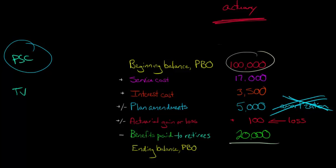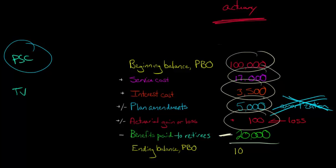So take $100,000 plus $17,000 plus $3,500 plus $5,000 plus $100 because it's a loss, and then minus $20,000. That gives us an ending balance of the PBO of $105,600.